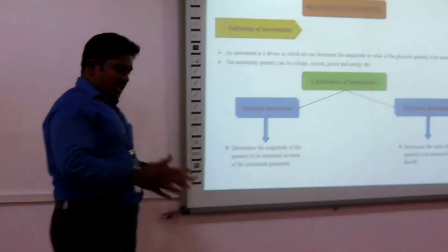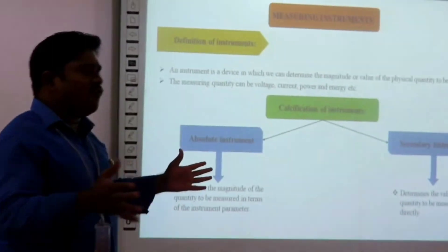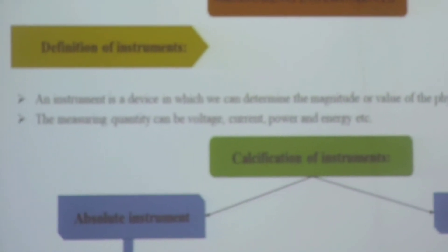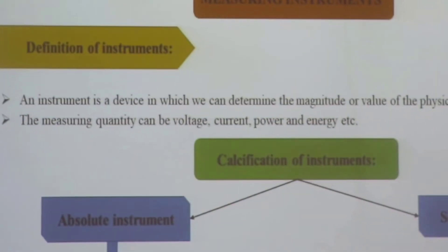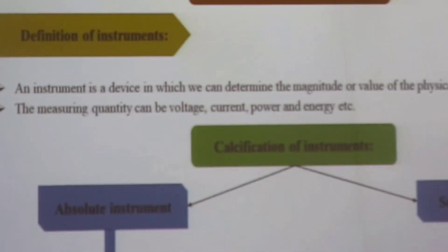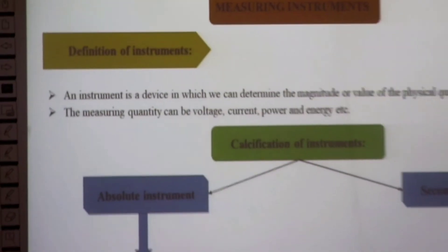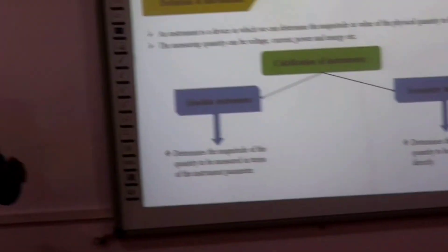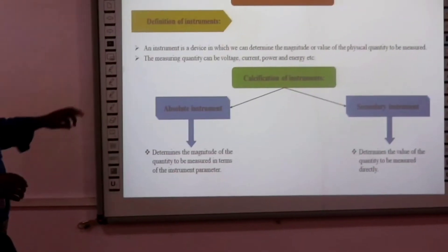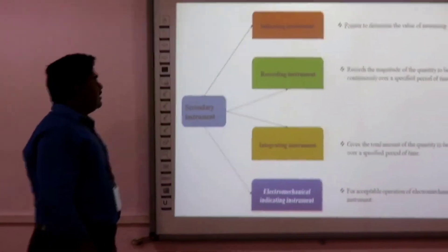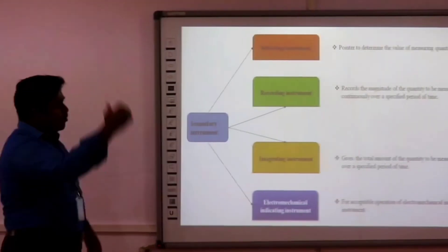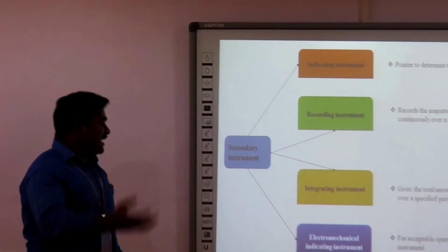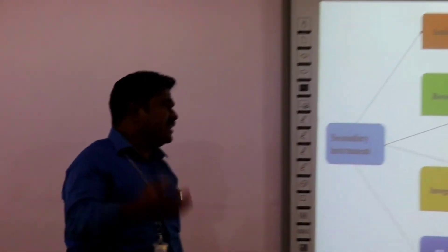Measuring instruments are classified into different kinds. The classification includes absolute instruments and secondary instruments. An absolute instrument determines the magnitude of the quantity to be measured in terms of the instrument's own parameters. A secondary instrument measures directly for the particular quantity. Secondary instruments have more types: indicating instruments, recording instruments, integrating instruments, and electromechanical indicating instruments.